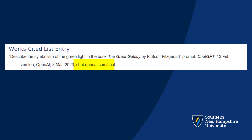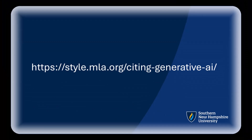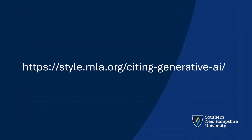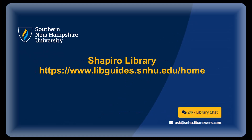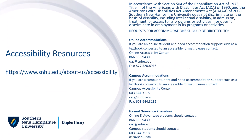Of course, there are plenty of specific examples that would take too long to cover here. So if you need more information, you can find a robust list of AI citation examples at the MLA website: https://style.mla.org/citing-generative-ai. If you need further assistance, you can always reach out to the Shapiro Library for help. Thanks for watching, and happy citing!